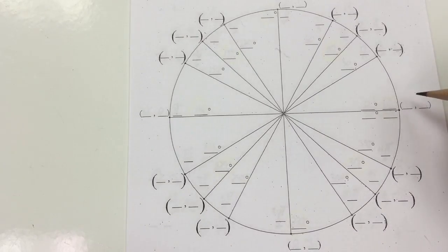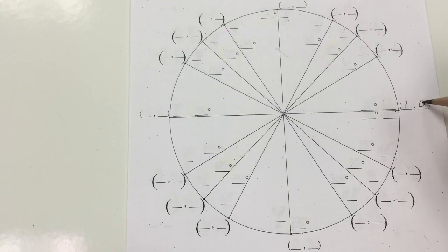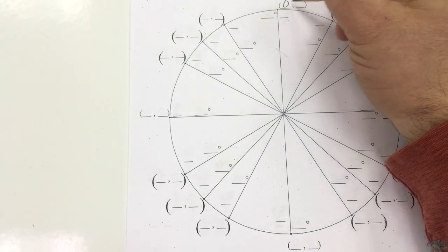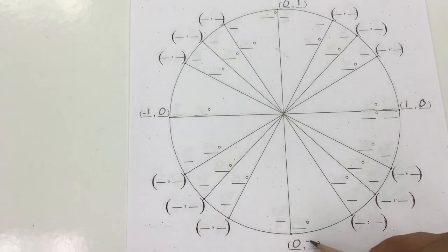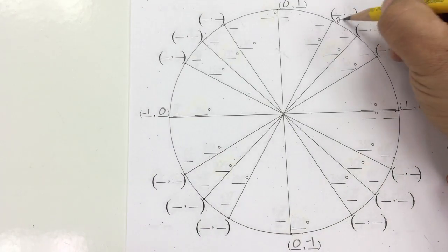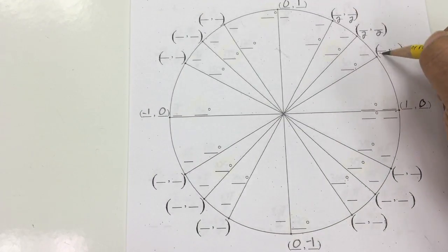Let's do a unit circle as fast as we can. This coordinate here is going to be (1,0), this quarter here (0,1), then (-1,0), and (0,-1). Now I'm going to divide all these by two.